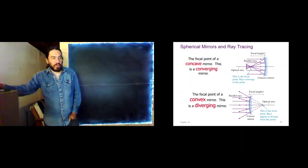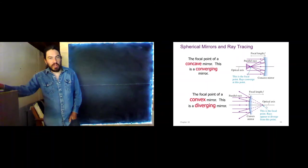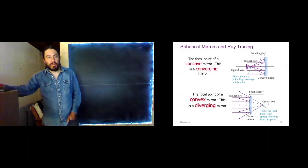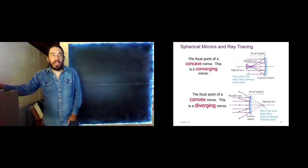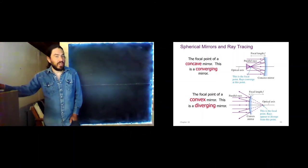We call that point the focal point. For a diverging mirror, parallel rays will diverge — they will appear as if they came from a point. That point they appear to have come from, we call that the focal point. Notice that mirrors only have one focal point, whereas lenses had two focal points.